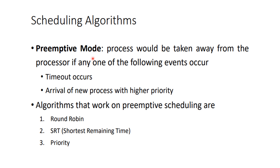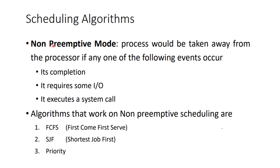For preemptive mode scheduling algorithms, the process is stopped mid-execution upon a timeout or arrival of an interrupt with higher priority. There are specific algorithms that work on preemptive scheduling, which will be discussed in detail. For non-preemptive mode, the system does not allow in-between routine diversion; the process is only taken away from the processor when it finishes its normal operation, enters its exit state, requires an I/O device event, or executes a system call. It will not be stopped if a high-priority interrupt occurs. The non-preemptive scheduling algorithms will also be covered in detail.